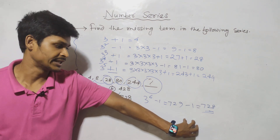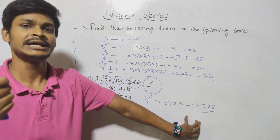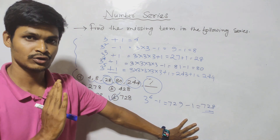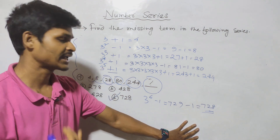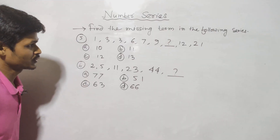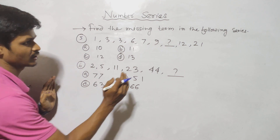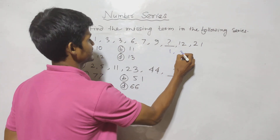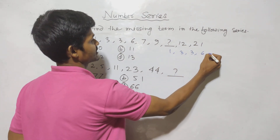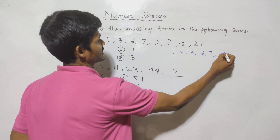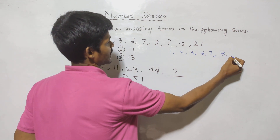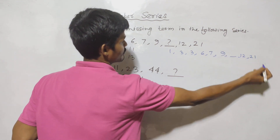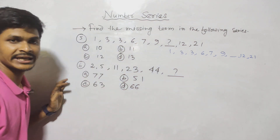If you like the video, please like the video and give us the next MCQ. The first question is: 1, 3, 3, 6, 7, 9, and the numbers are 12 and 21.